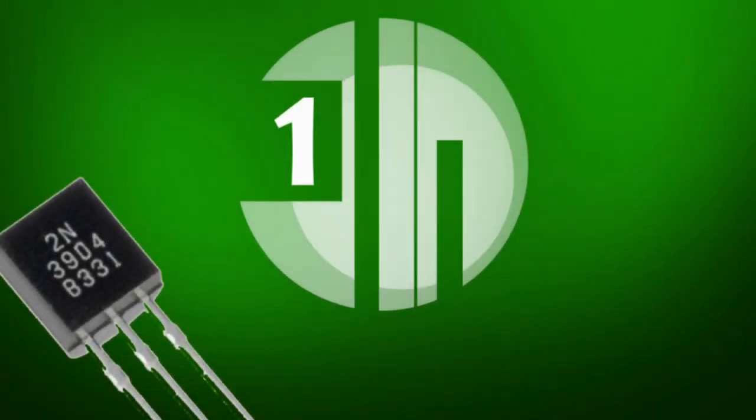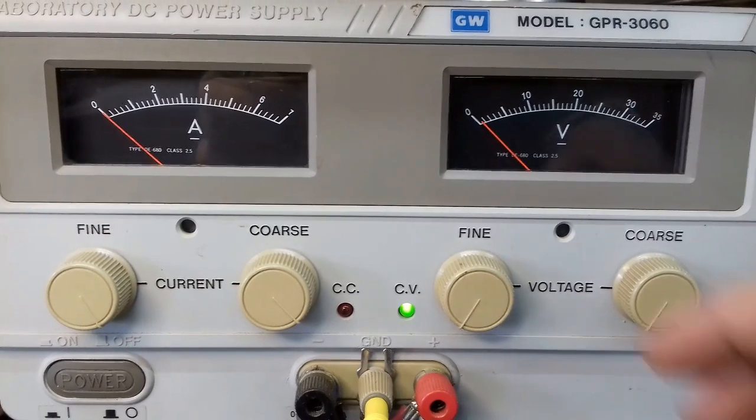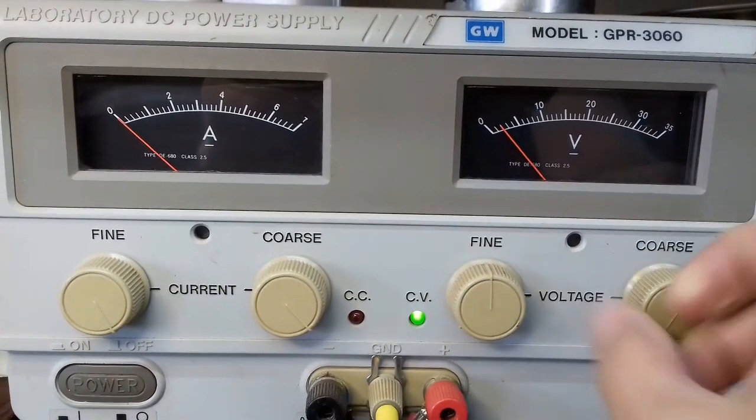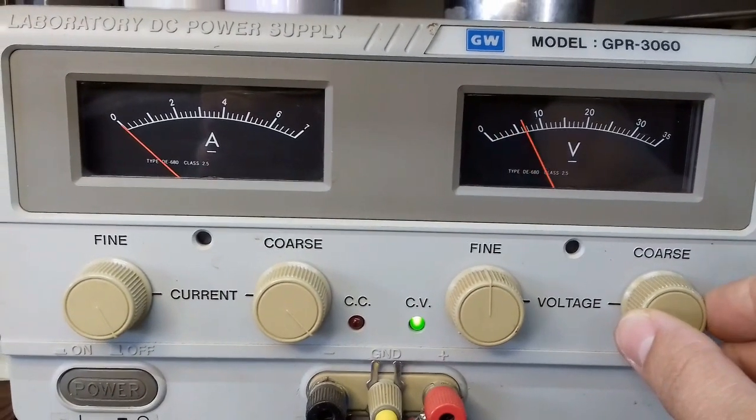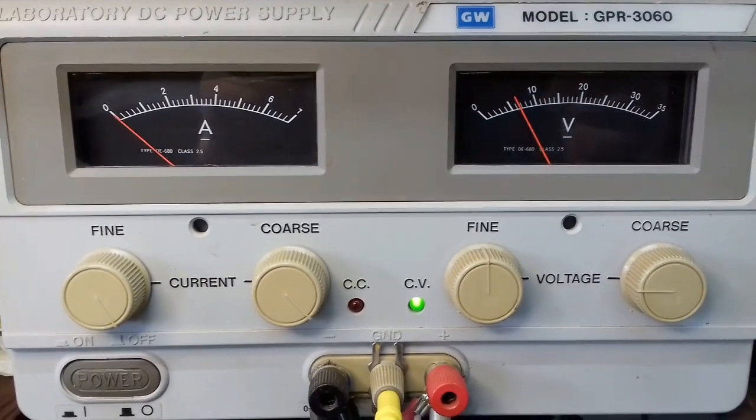So here we are. The first method I'm using the most is the LED method. So suppose you don't have a multimeter around, simply grab a 5 to 12 volts voltage source. Connect the plus to the collector.